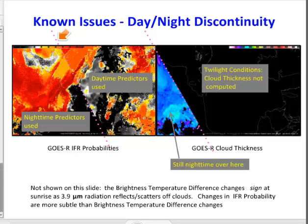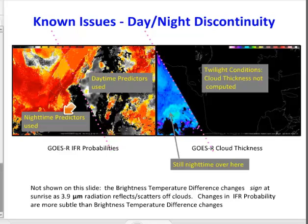You can see a discontinuity in IFR probabilities during the transition from day to night or vice versa. Satellite predictors used during the day differ from those used at night. In general, IFR probability increases during the day because visible data are used to cloud clear, so the likelihood that a cloud is present is better represented in the algorithm. The GOES-R Cloud Thickness product disappears during twilight, but it is available all night and during most of the day for single-layer water clouds.